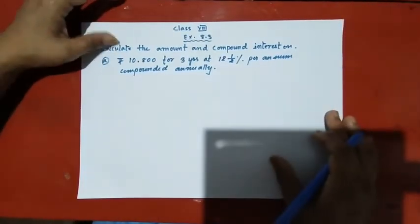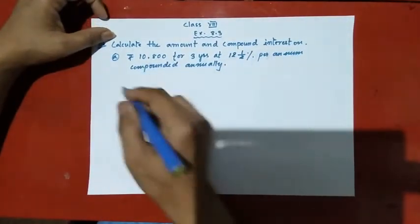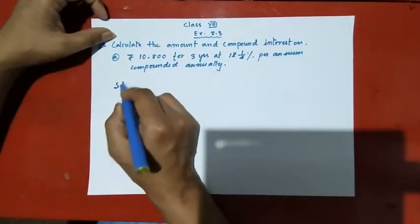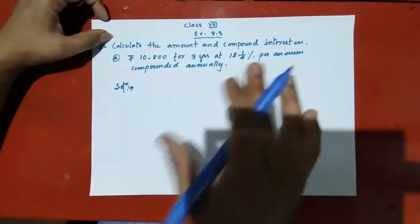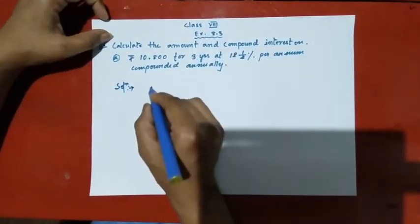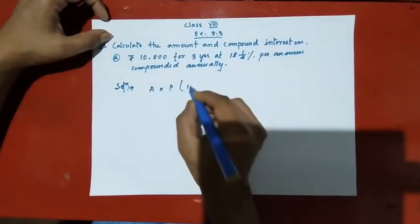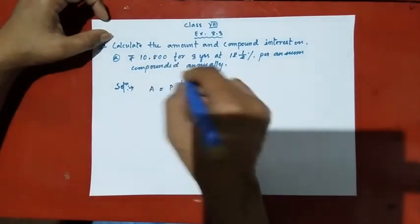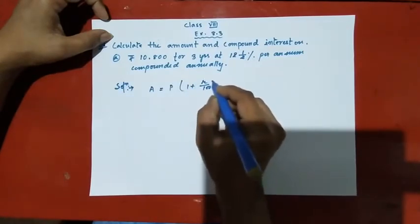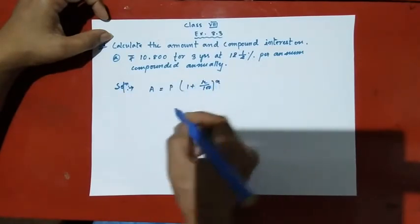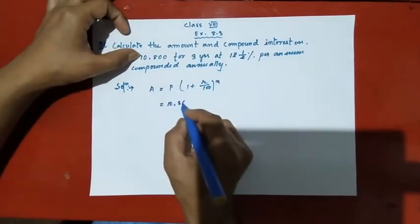Now you can see the formula. The formula is: Amount is equal to P of one plus r by hundred to the power n. Let me show you — the principal is ten thousand eight hundred.